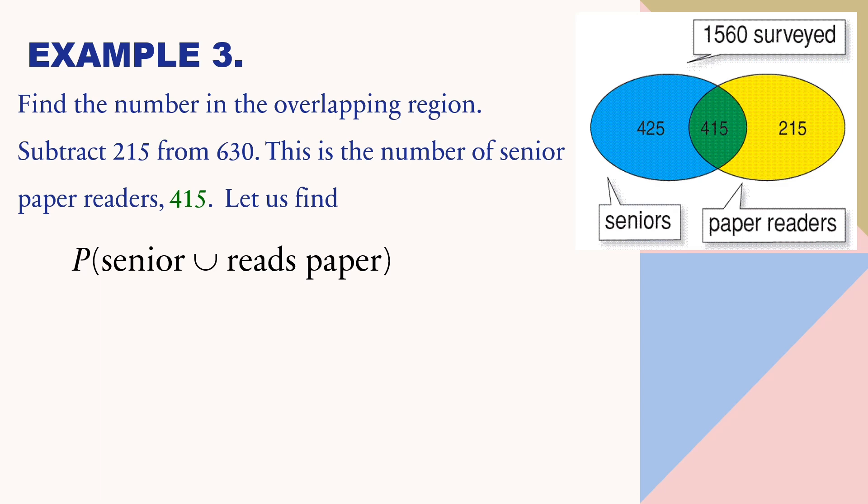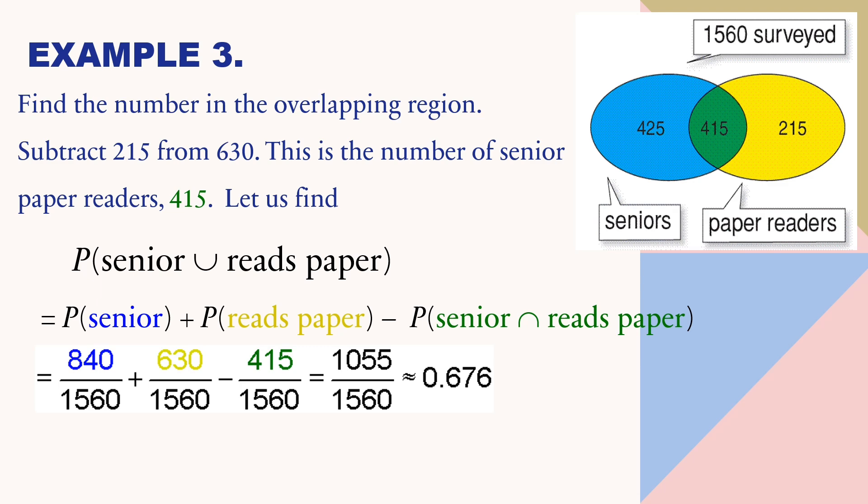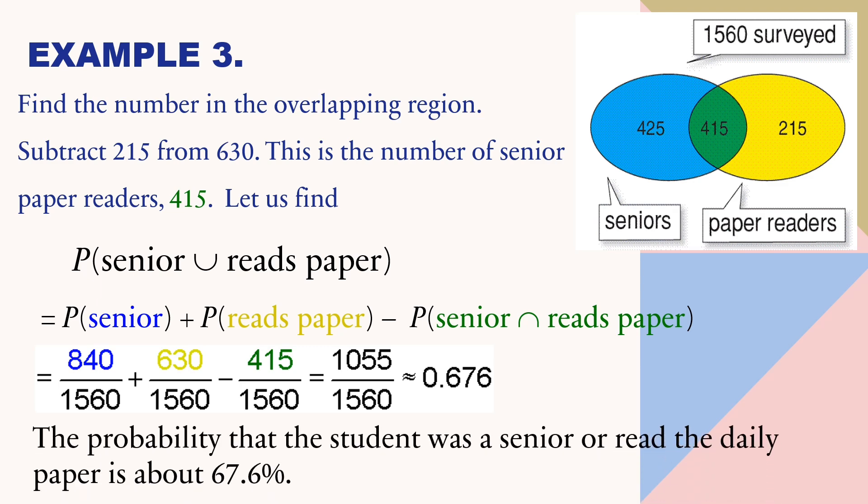Now, let us find out the probability of senior or read paper. So, the equation becomes the probability of your event A, which is senior, plus the probability of your event B, which is who reads paper, minus the probability of their intersection, which is senior and reads paper. For the probability of senior, there are 840 out of 1,560, plus the probability of who reads paper, we have 630 over 1,560, minus their intersection, which is 415 over 1,560, and that is equal to 1,055 over 1,560, or equivalent to 0.676. So, the probability that a student was a senior or read the daily paper is about 67.6%.